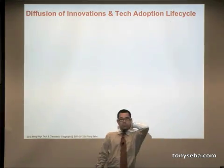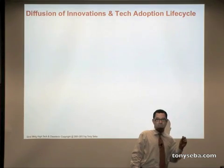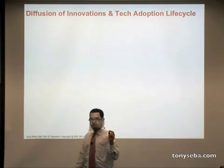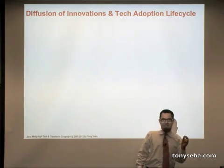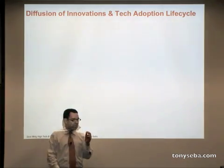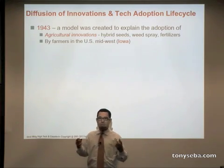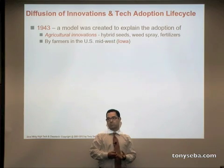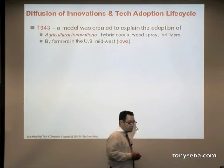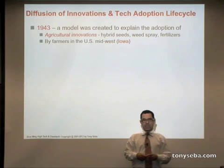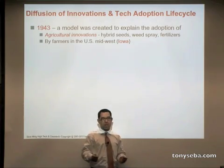Does anyone know when and where the diffusion of innovation model was created? A lot of people in Silicon Valley think we invented it — we are the center of the world in technology, after all. But actually, in the 1940s, a model was created to explain the diffusion of agricultural innovations — defined as hybrid seeds, fertilizers, wheat spray, and so on — in Iowa. This only applied to those agricultural innovations.